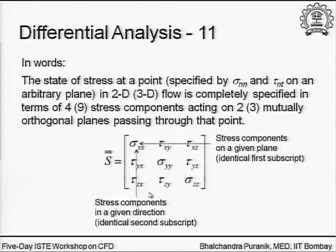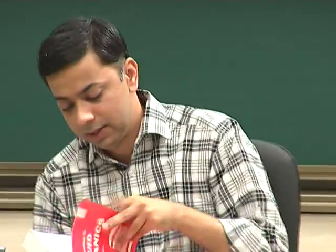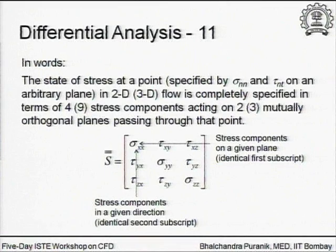Many introductory fluid mechanics textbooks — such as Potter's and Fox and McDonald — do not formally go through this argument. They simply state that the state of stress in a 3D flow is specified by nine stress components on three mutually perpendicular planes through the point, without showing where that comes from. The formal analysis on a triangular element is what brings about that statement.